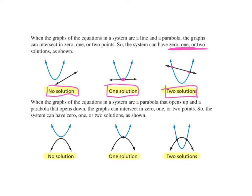The point where they touch will be a coordinate point — that's how we're going to write our solution. So here we'll have one solution. Here we would have two solutions, so x1, y1, x2, y2. We'll either have no solution, one coordinate point, or two coordinate points for two solutions.